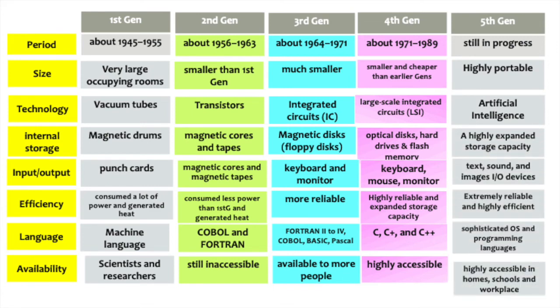The development of the fifth generation computers is still in progress. They are highly portable, meaning they can easily be carried from one place to another. They use ultra-large scale integration circuits as the main electronic component. They also use artificial intelligence, which refers to the science of developing machines that mimic human behavior. They have a highly expanded storage capacity. They use input and output devices that allow transfer of data in the format of text, sound, still images, animated images, and video. They are extremely reliable and highly efficient.